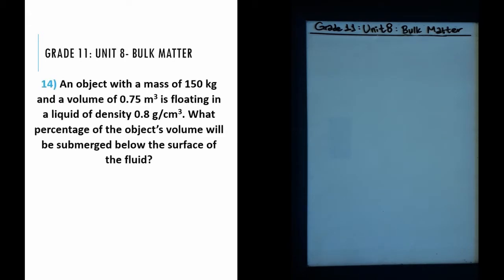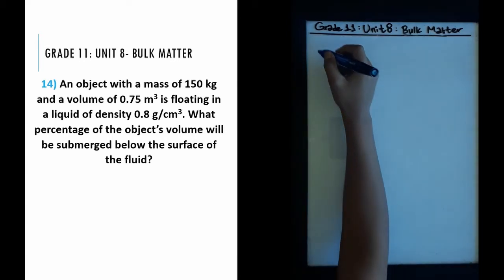Question 14 states that an object of mass 150 kg and a volume of 0.75 meters cubed is floating in a liquid of density 0.8 grams per centimeter cubed. What percentage of the object's volume will be submerged below the surface of the fluid?